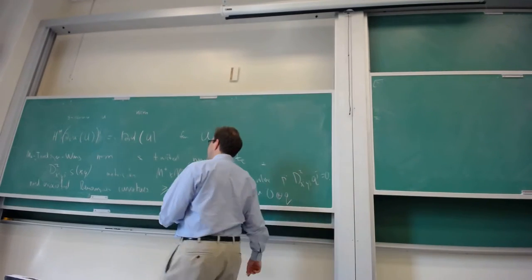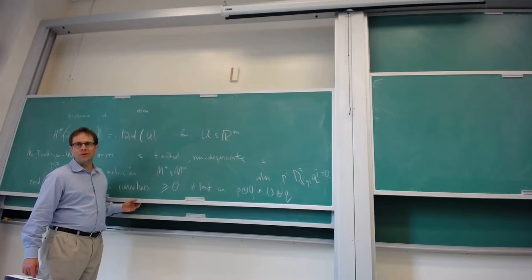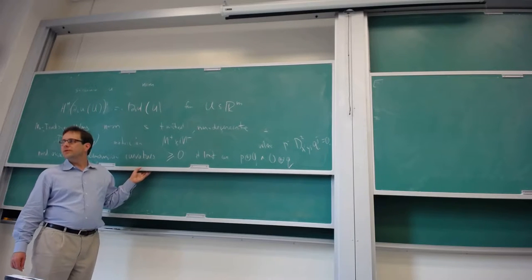And of course, so curvature involves taking two derivatives of the metric tensor and so this is really some kind of condition relating third and fourth. It says that the fourth derivative of S controls certain products of the third derivatives that are put together in a geometrical way.